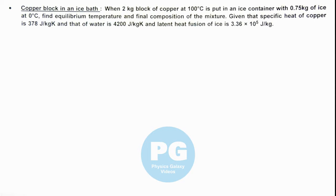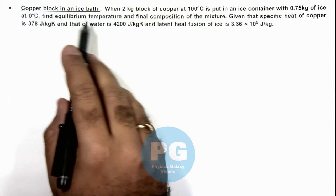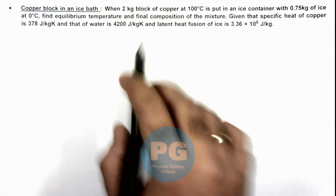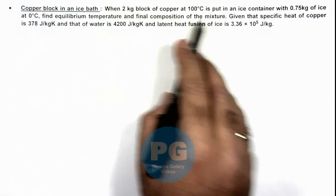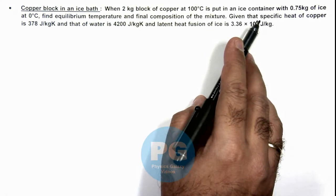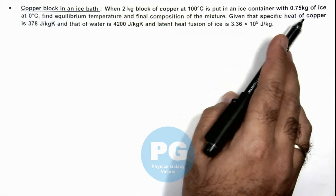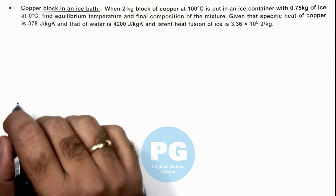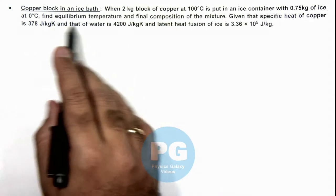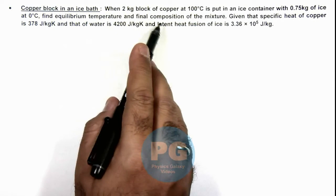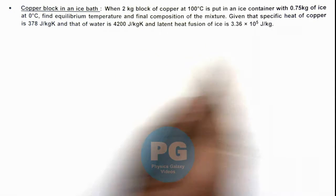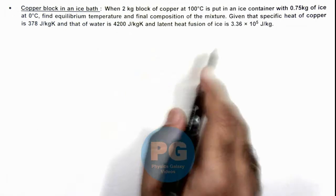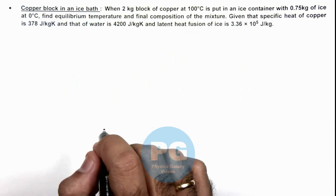In this illustration we'll analyze a copper block in an ice bath. We are given that when a 2 kg block of copper at 100°C is put in an ice container with 0.75 kg of ice at 0°C, we are required to find equilibrium temperature and final composition of the mixture. Given that specific heat of copper is 378 J/kgK and that of water is 4200 J/kgK, and latent heat of fusion of ice is 3.36 × 10^5 J/kg.